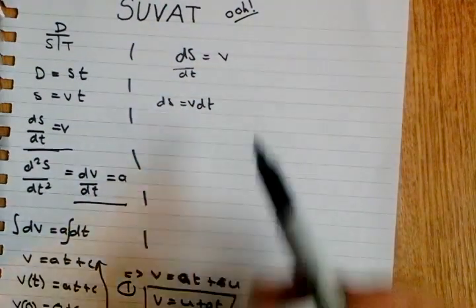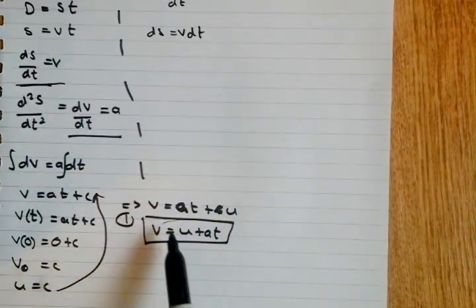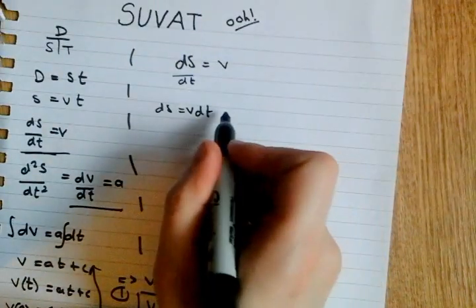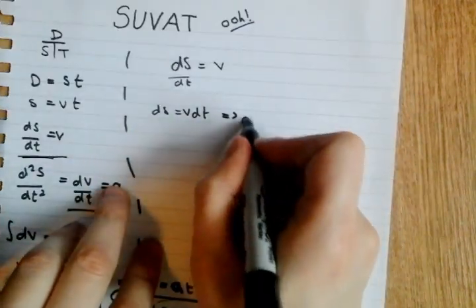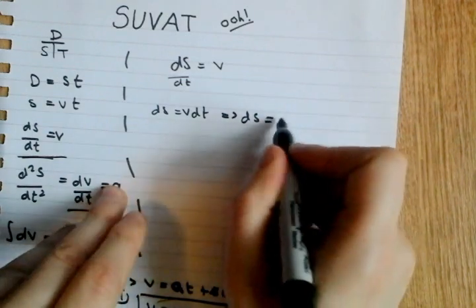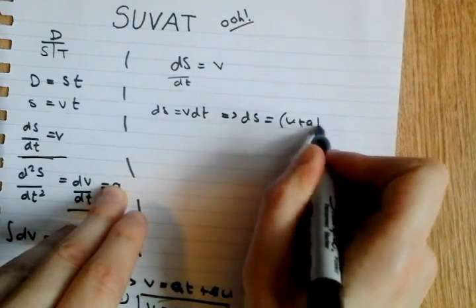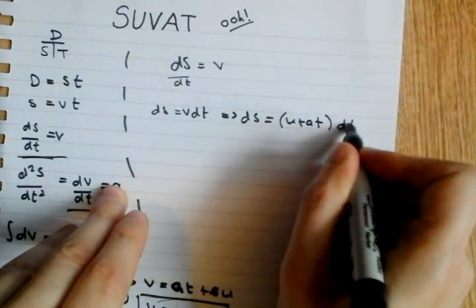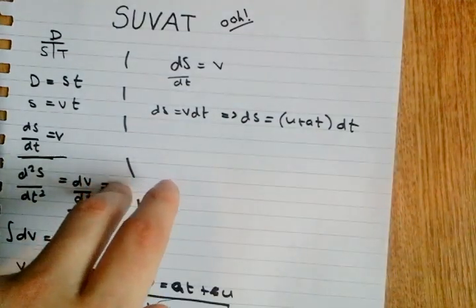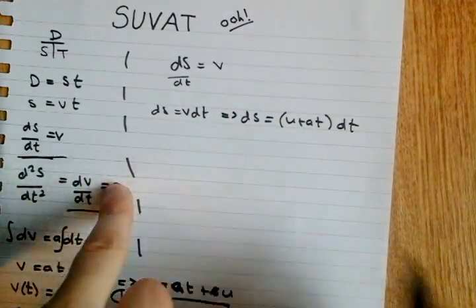What do we do now? We got a V, and we have an equation for V. Let's substitute it in. dS is equal to U plus AT dT. Can you guess what we do next? Integrate it! How exciting!